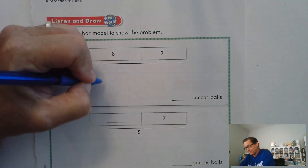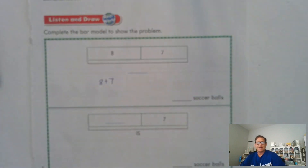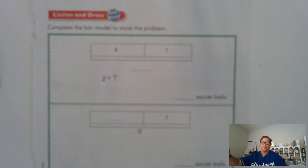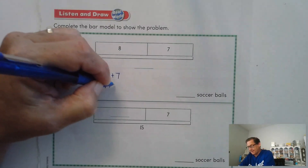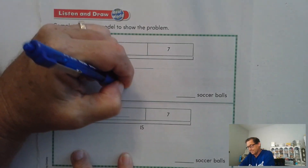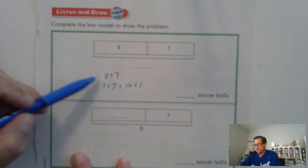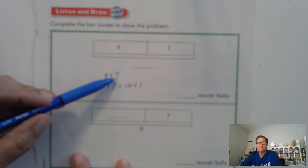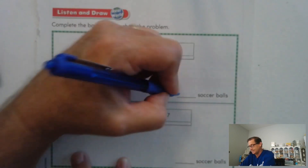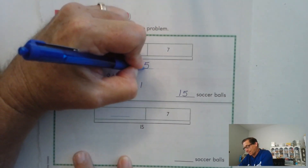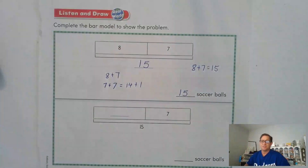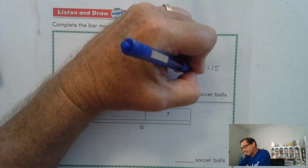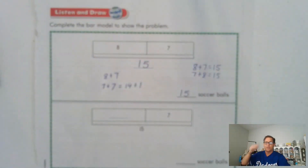So what we have to do is eight plus seven. We can use the math fact — the doubles fact — seven plus seven plus one. We can change the math fact that we should know, and seven plus eight is also related to that.